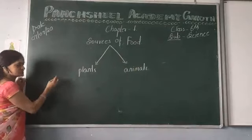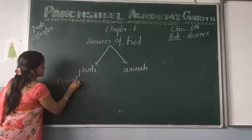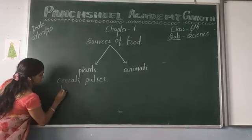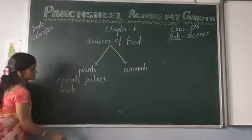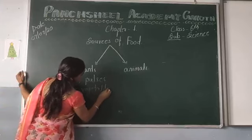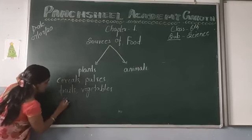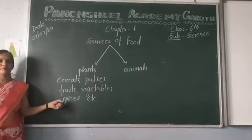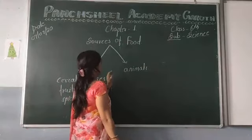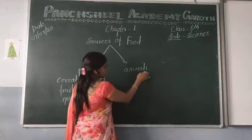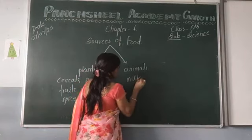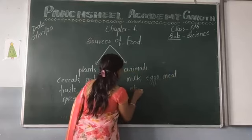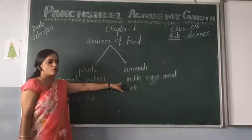Ingredients or food items obtained from plants include cereals, pulses, fruits, vegetables, etc. All these food items are obtained from plants. The food items obtained from animals are meat, eggs, etc. These are the food items which are obtained from animals.